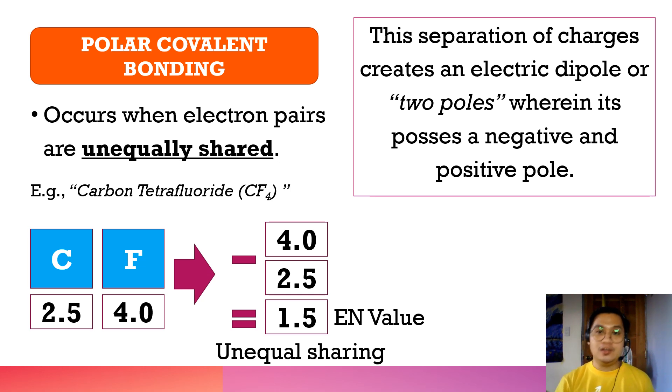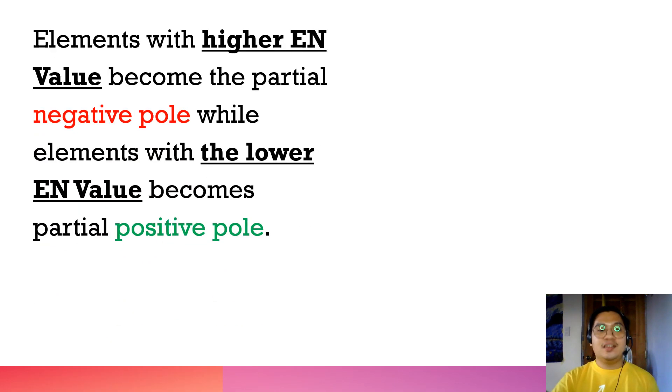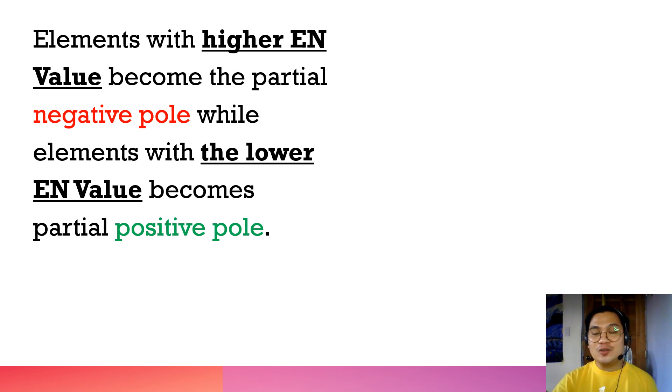To determine the positive and the negative pole in a dipole covalent bonding, you should know the lowest and highest EN value. The EN value — also known as the electronegativity value — can be found in the periodic table of elements or in the electronegativity chart. Elements with higher EN value become the partial negative pole, while elements with the lower EN value become the partial positive pole.